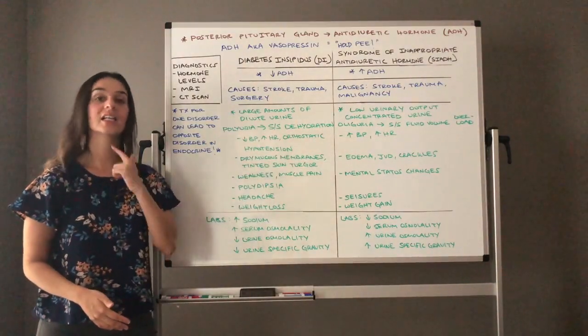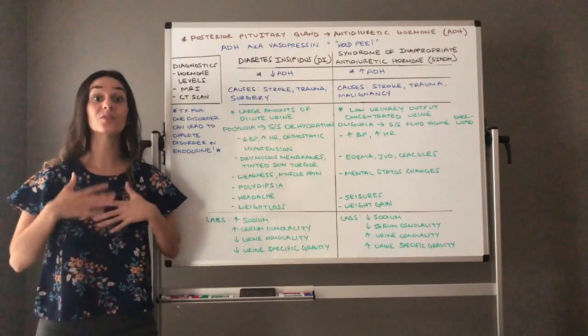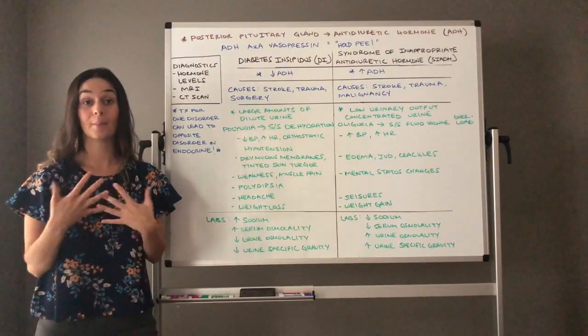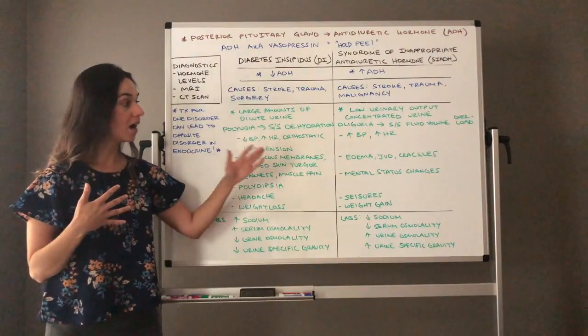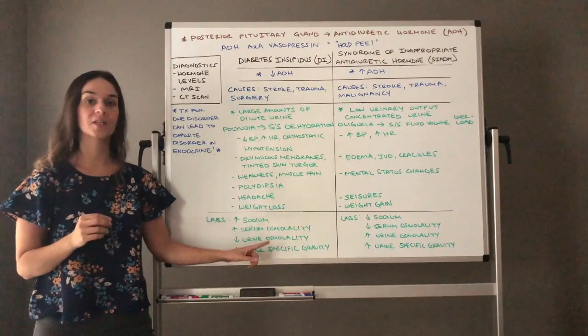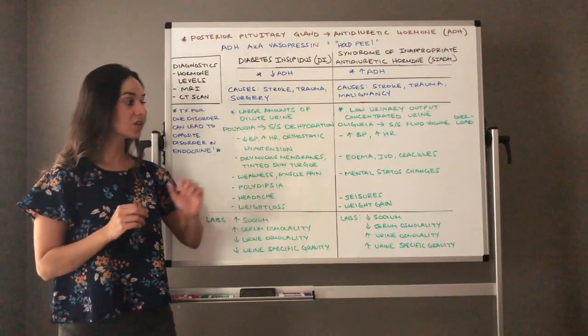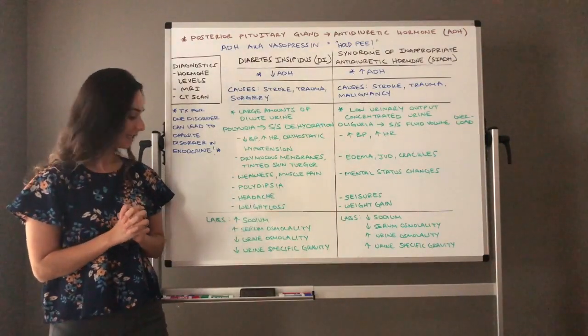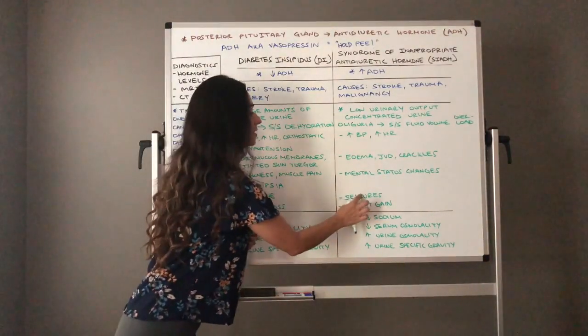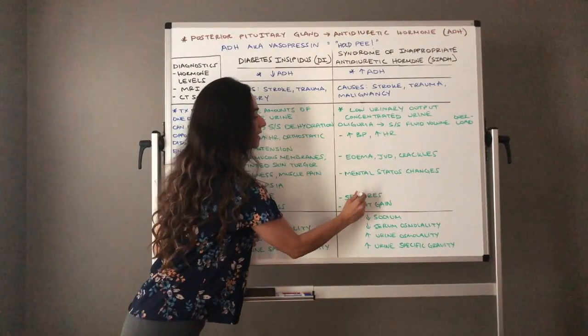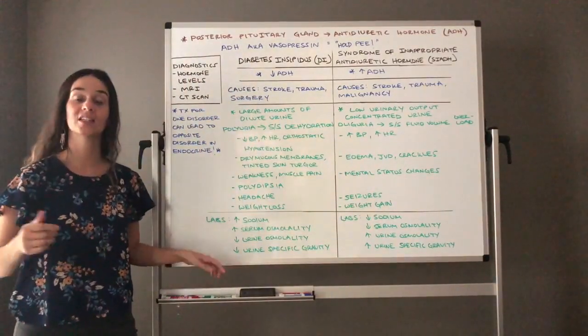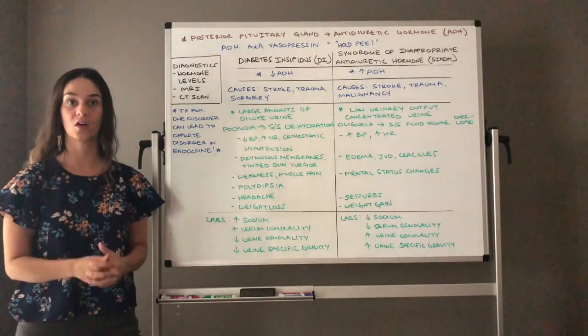They can have edema, they can have jugular vein distension, they can have crackles in their lung if the fluid does back up into their lungs. Mental status changes is something big to look at and we're going to talk about sodium levels in one second. We need to look for potential seizures. We need to look for weight gain because remember again they are holding on to all this fluid.